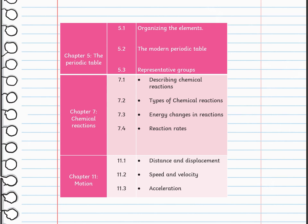Then we are going to move into a deeper concept: chemical reactions. We will be talking about describing chemical reactions, types of chemical reactions, energy changes in reactions, and reaction rates. We are going to understand which elements can react together and which cannot, and describe the properties of each element. This covers the chemistry part of this book.